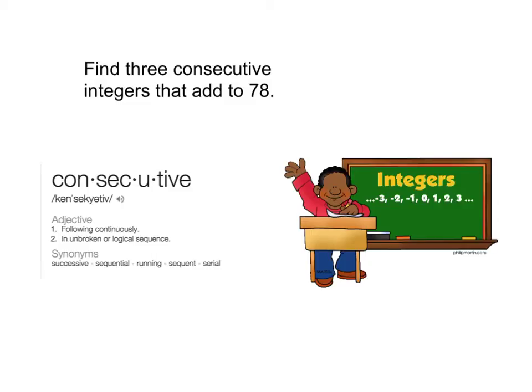Okay, this was the homework problem last night. Find three consecutive integers that add up to 78.